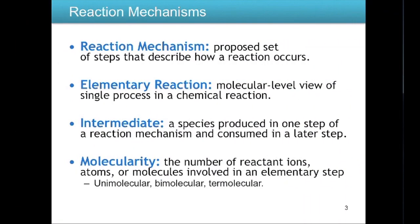A reaction mechanism is a proposed set of steps that describe how a reaction occurs. Each step in a reaction mechanism is called an elementary reaction. An intermediate is a species produced in one step and consumed in a later step. The molecularity of a reaction refers to the number of reactant ions, atoms, or molecules involved within one elementary step, which represents a single process like a single collision.